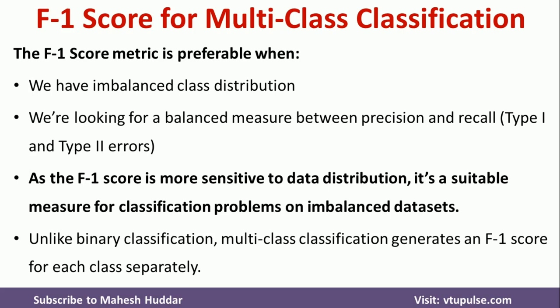In binary classification, we get an overall F1 score for the entire dataset. But when it comes to multi-class classification, F1 score is generated for every class. For example, if we have three classes, F1 score is generated for all three classes separately, whereas in binary classification we get just one overall F1 score for the entire dataset.